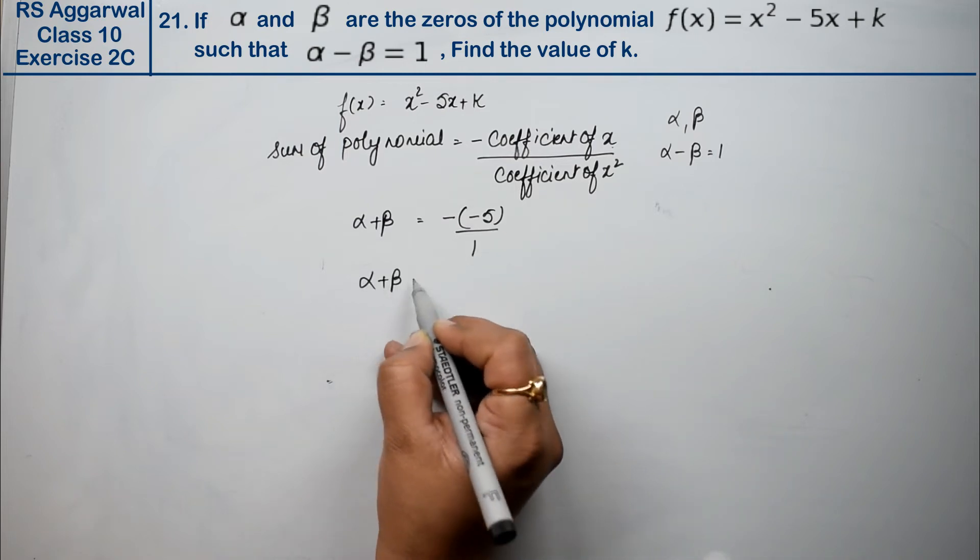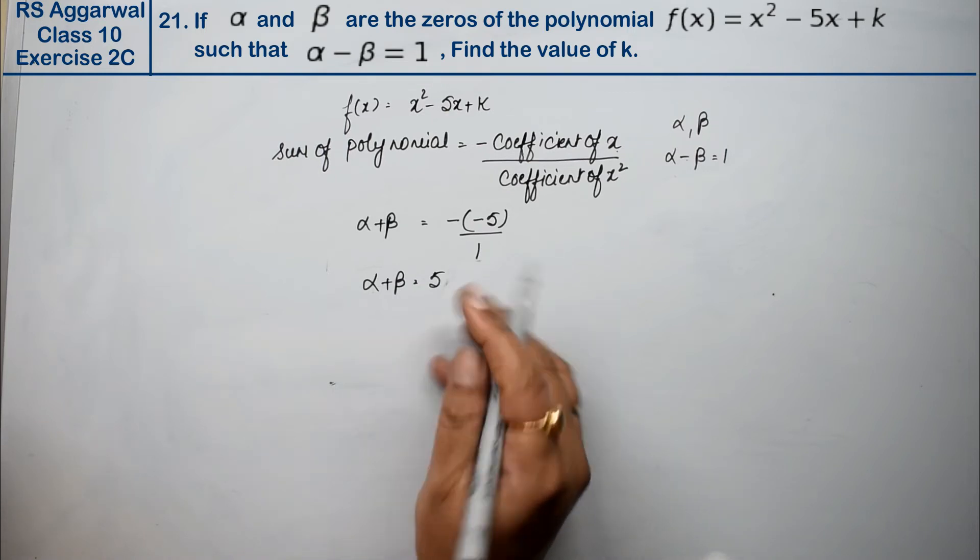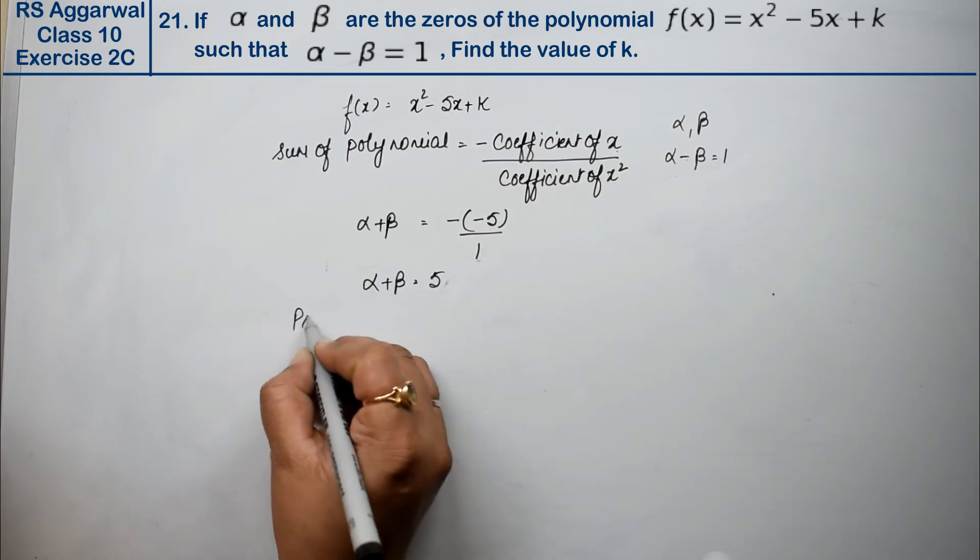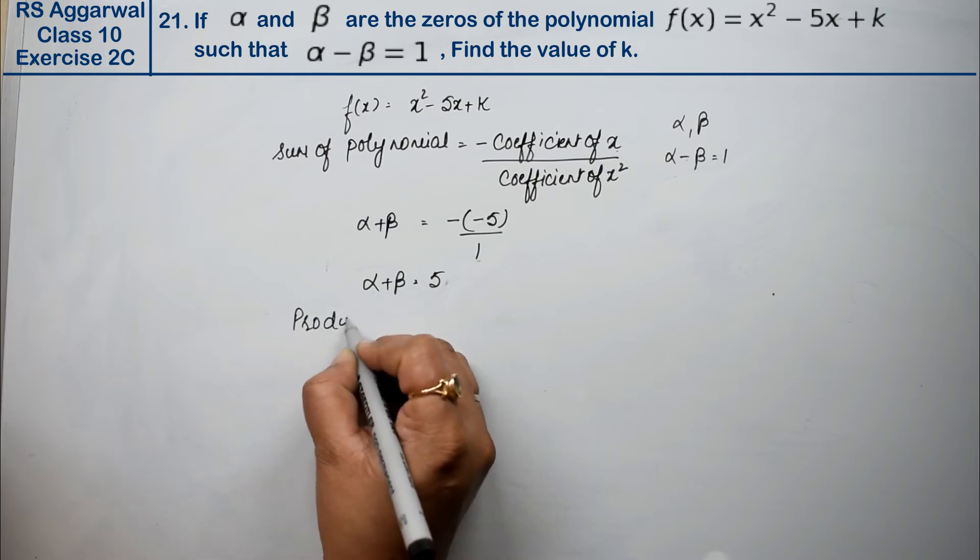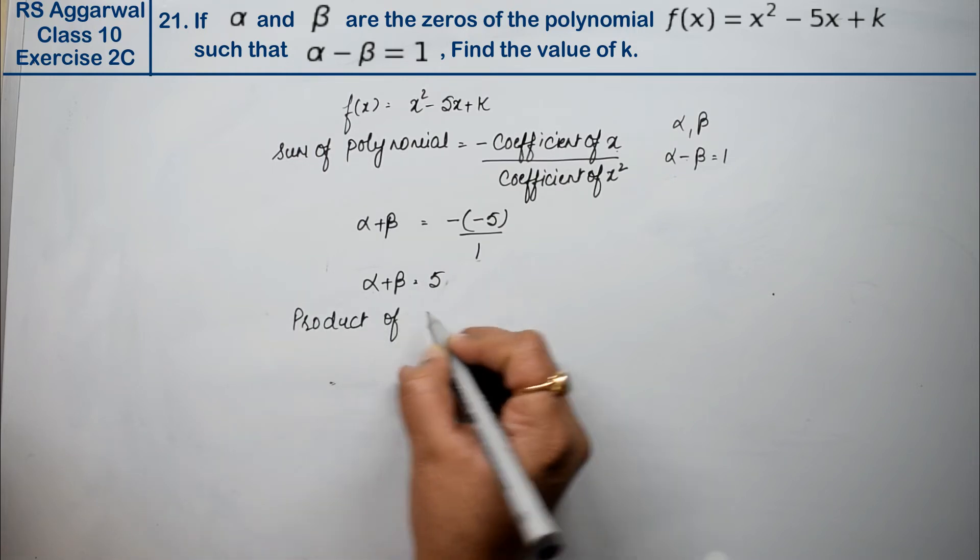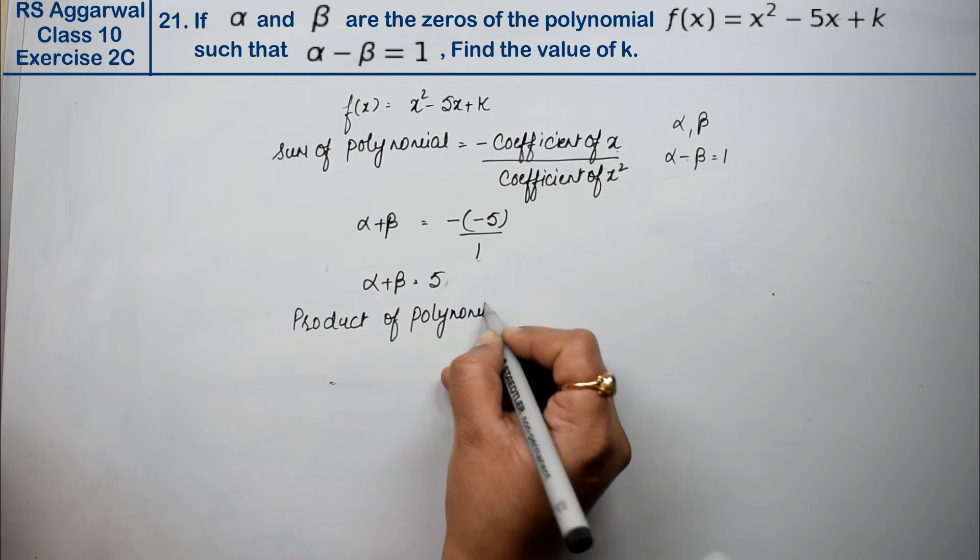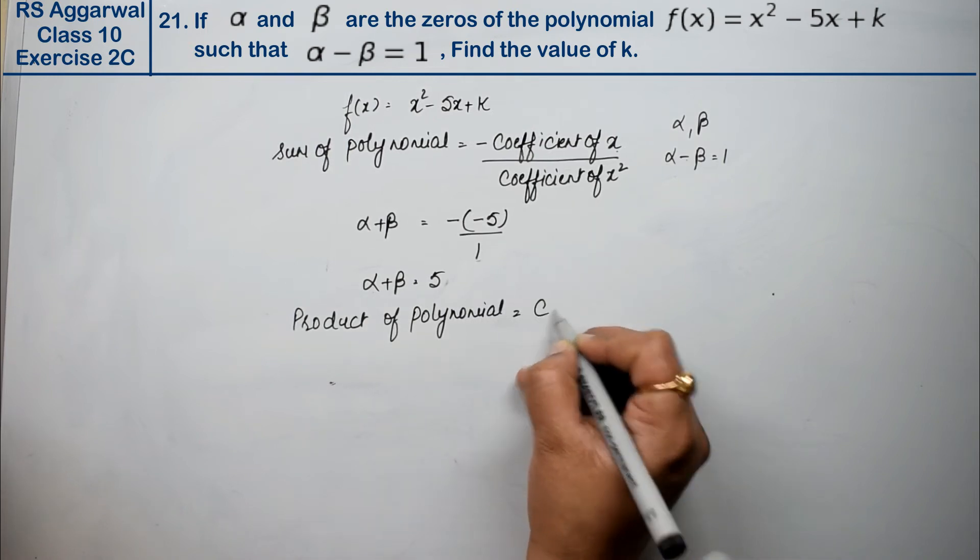Now we can't find k from this, as k is not here. So we'll look at the product of polynomial. The formula for product is constant term upon coefficient of x².